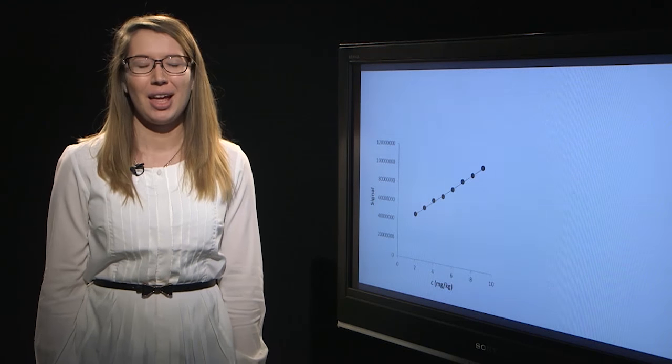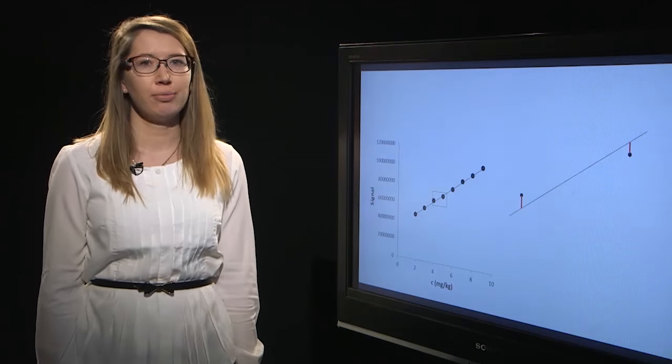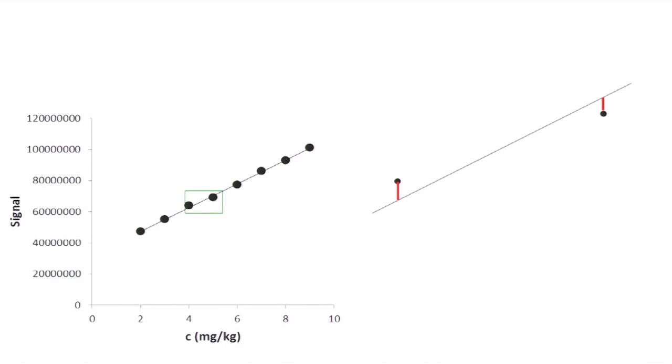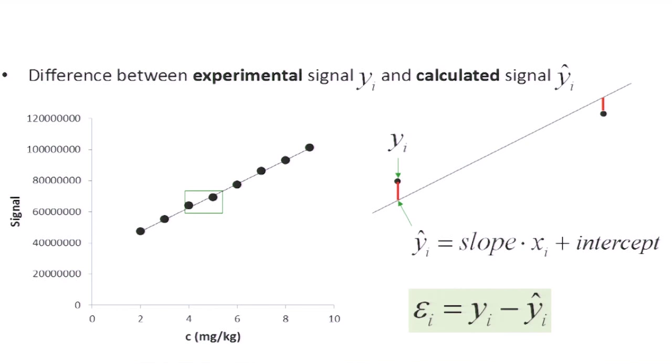What does this mean? When we take a closer look of our calibration graph, we see that there is a difference between the experimental signal we get from our measurements and the calculated signal we get from the calibration function describing our calibration model. And this difference between the experimental signal and calculated signal is defined as the residual.